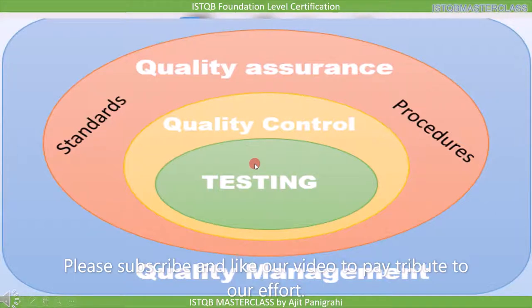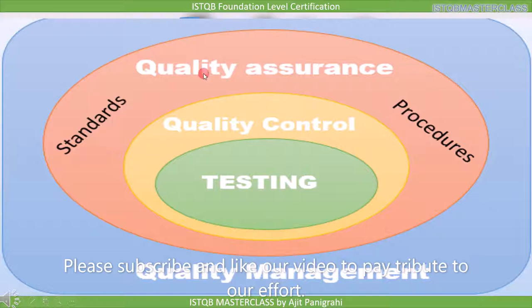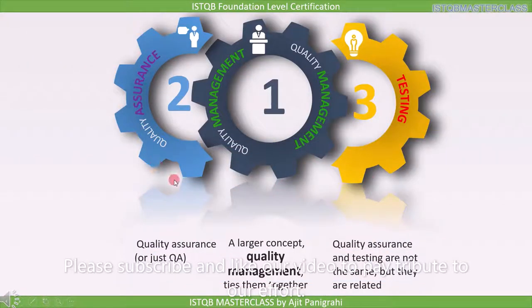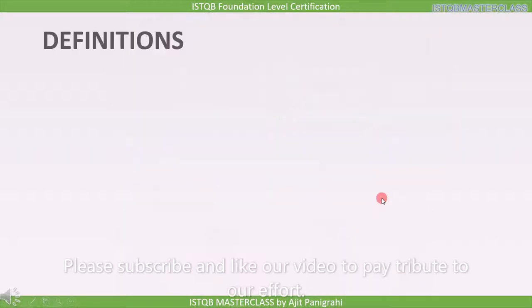In an organization we establish quality management. Quality management has quality assurance as a subsystem to ensure that quality requirements will be fulfilled with the help of standards and procedures. Inside QA we have quality control to check if quality is fulfilled or not, and this checking is done using different testing techniques.